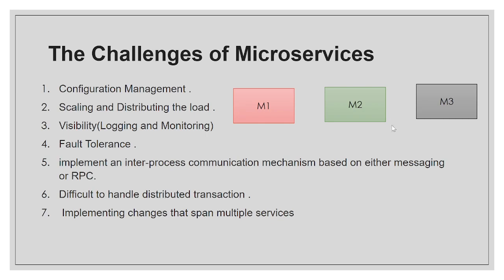Problem 3 is visibility. With many microservices deployed, how do you monitor whether something is up or down? And when a request flows from microservice 1 to microservice 2 to microservice 3, how do you identify and trace the logs for that same request across all those microservices? Logging and monitoring is again a problem.